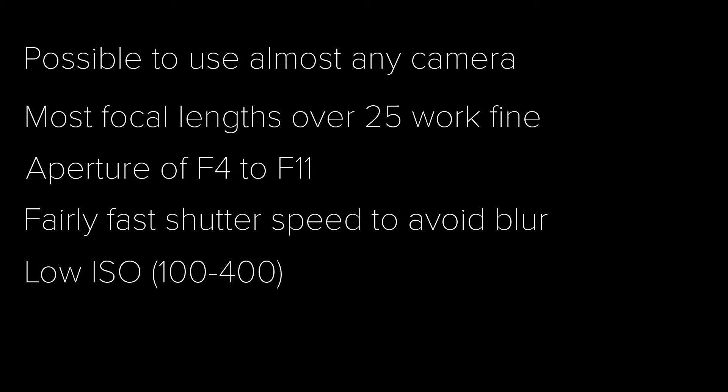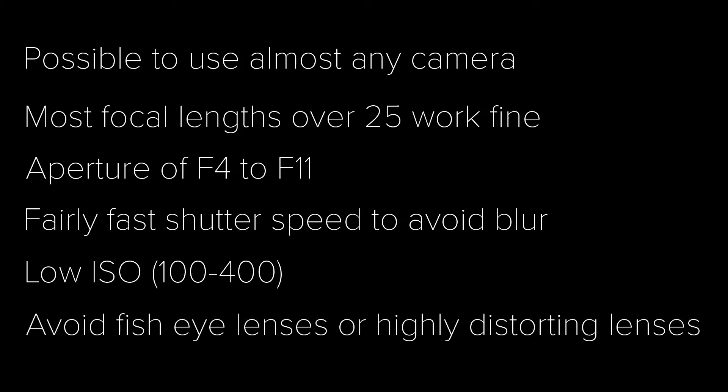ISO should be as low as possible, preferably between 100 and 400 to avoid graining. Higher quality cameras can manage with higher ISOs, but it is largely about trial and error. Avoid lenses that have too low a focal length or have special features like fisheye, as these will distort the photographs and can cause problems in the reconstruction phases of Agisoft.